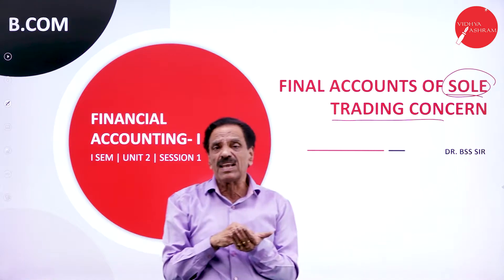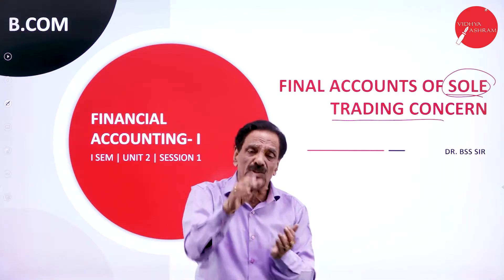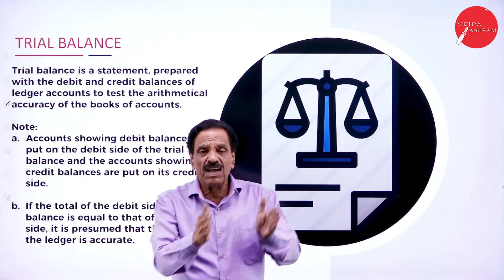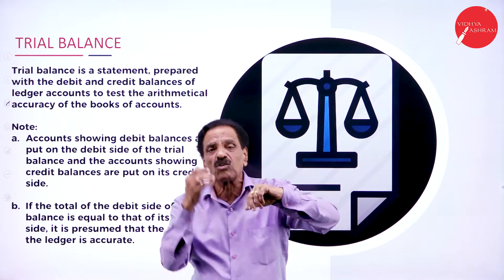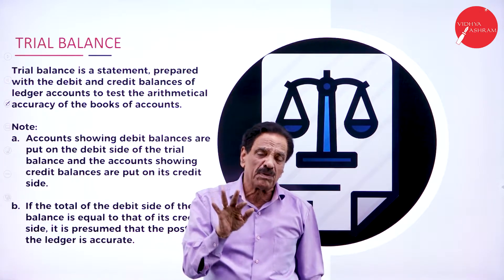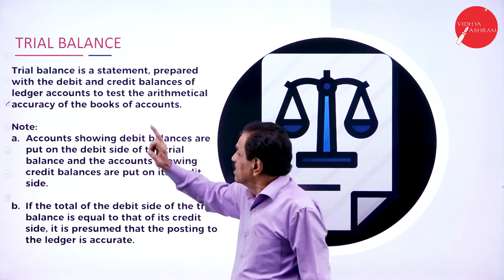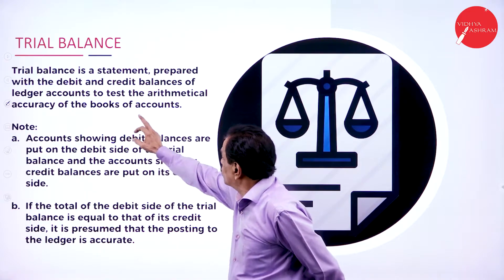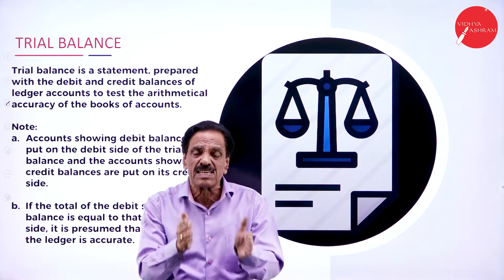Before going to the final account, we first need to understand the trial balance — how it is prepared and what it contains. From journal entries we post to the ledger, and from the ledger we get final balances for accounts such as capital, building, salary, and rent. These last balances are transferred to the trial balance. Trial balance is a statement prepared with the debit and credit balances of ledger accounts to test the arithmetical accuracy of the books of account.